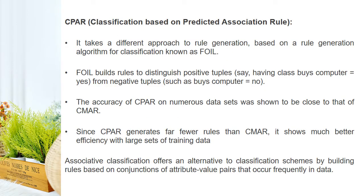The next method is CPAR, Classification based on Predicted Association Rules. It takes a different approach to rule generation based on a rule generation algorithm for classification known as FOIL. FOIL builds rules to distinguish positive tuples from negative tuples — for example, positive tuples having class label 'buys computer = yes' and negative tuples such as 'buys computer = no'. The accuracy of CPAR on numerous datasets was shown to be close to that of CMAR. Since CPAR generates far fewer rules than CMAR, it shows much better efficiency with large sets of training data.